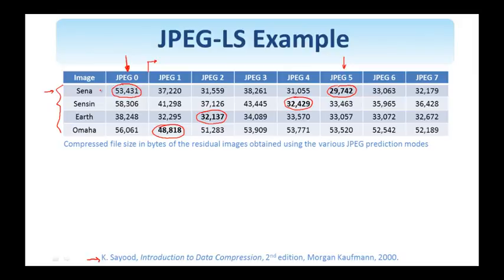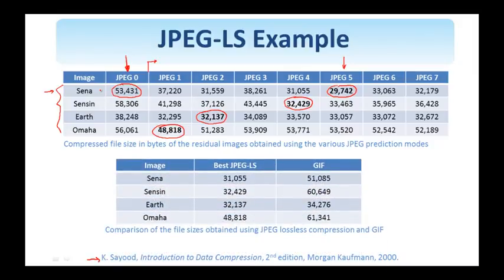We also show here a comparison between the best JPEG-LS and GIF, which was, if you recall, a technique to compress graphical images utilizing implementation of a dictionary technique, and more specifically, the LZW technique, as I mentioned when we covered dictionary techniques. We see that in all cases, JPEG-LS is performing better than GIF. However, in this case, the performance is comparable, and this image is closer to a graphical image, and therefore this justifies the semi-equivalent performance.